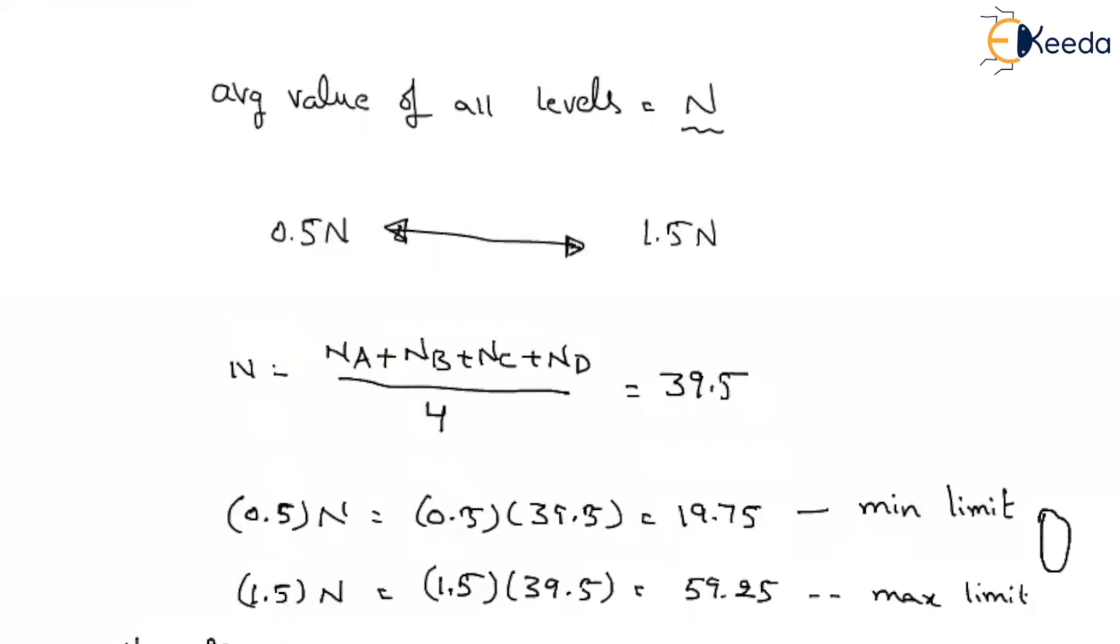What about NB? NB will be equal to 33. It is also in this limit. Okay, consider. What about NC? NC will be equal to 70. Is it within this limit? It is exceeding the maximum limit. That is why we should not consider it.